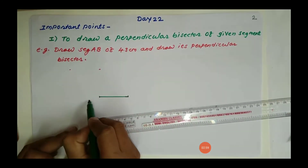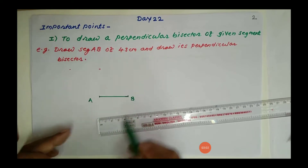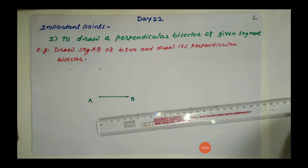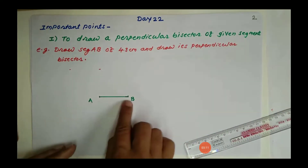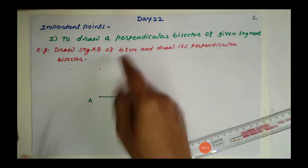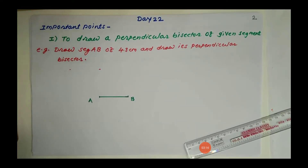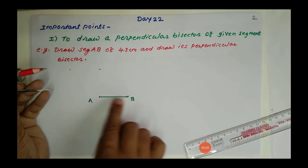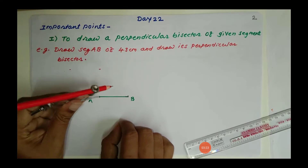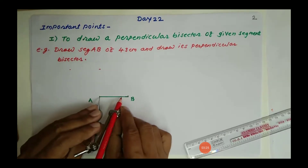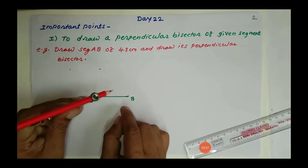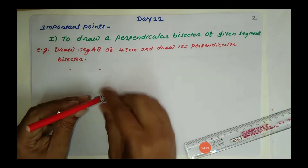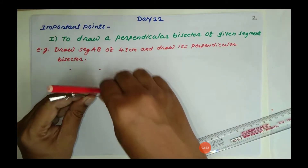Now draw the activity in steps. Put the metal end of the compass on both end points of the segment. Take more than half the distance and make arcs on both sides of the segment.